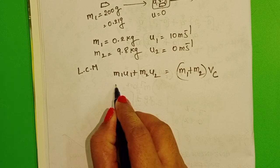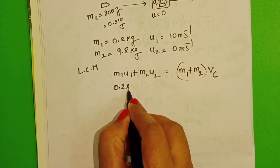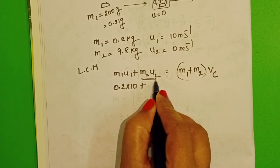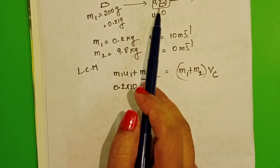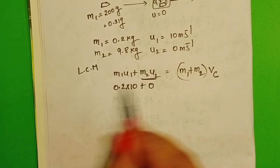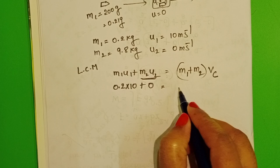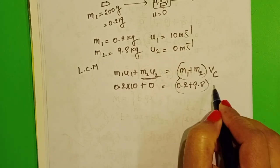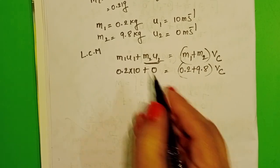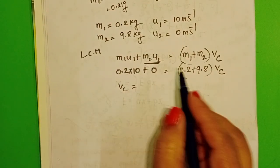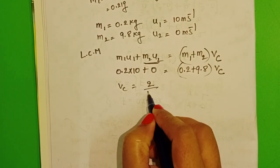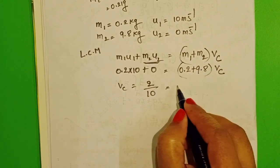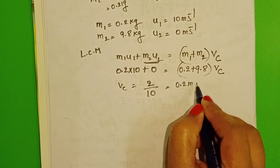Mass of the bullet 0.2 into 10, and this term is 0 because initially the sand bag is at rest position. Total mass 0.2 plus 9.8 into common velocity. Find out the common velocity: Vc equals 2 by 10, that is equals to 0.2 meters per second.